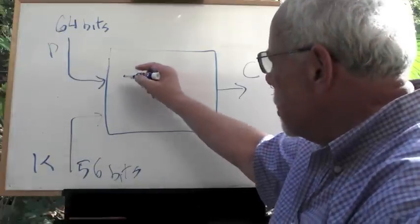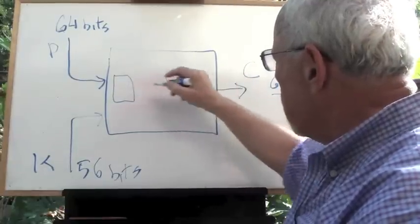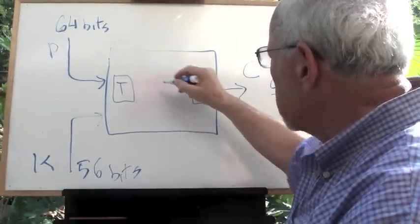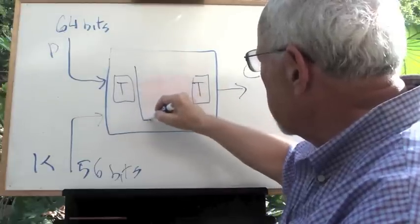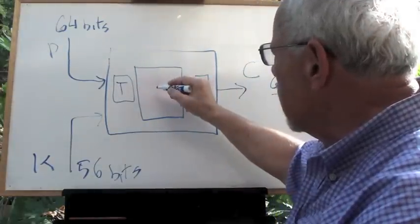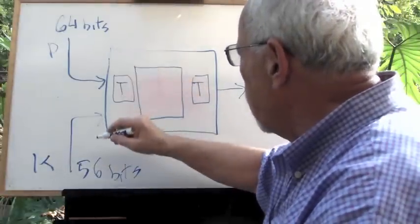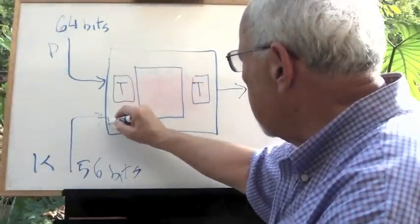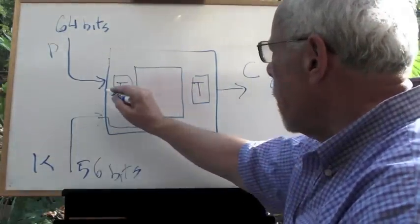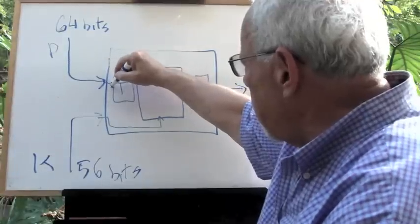Inside we see three parts. This is called transposition, this is transposition, and this is the mainstay where the processing is done with the key. The key comes here.